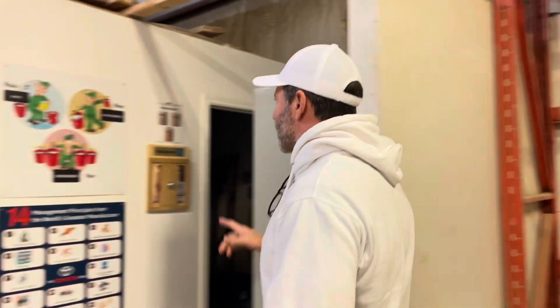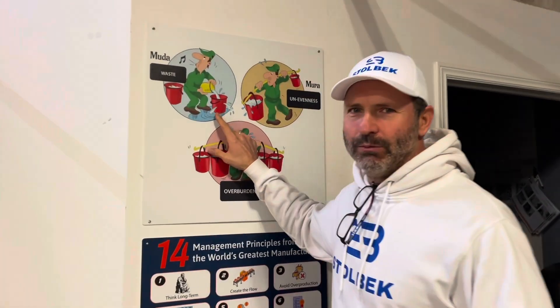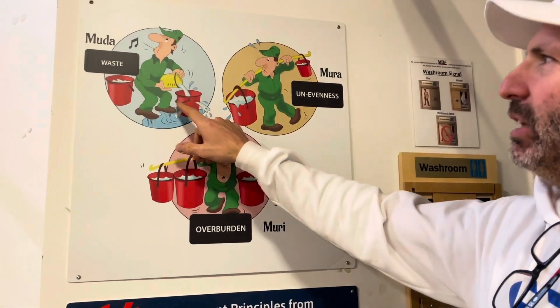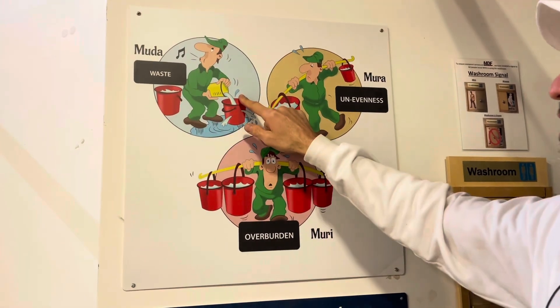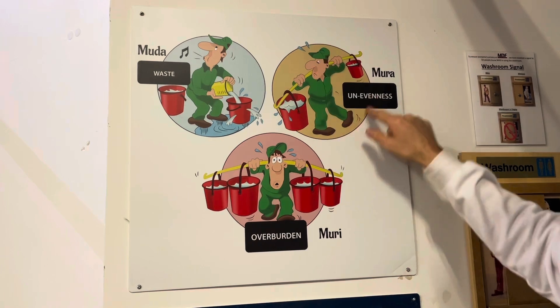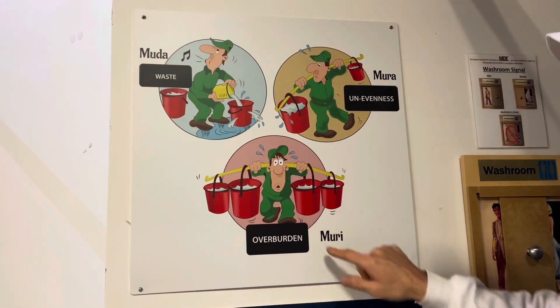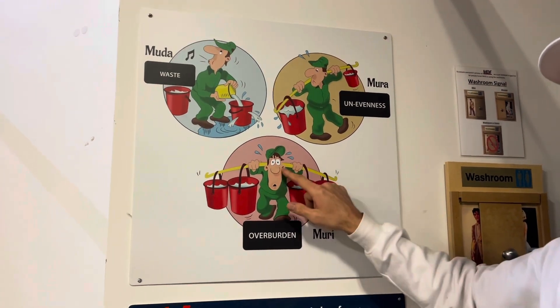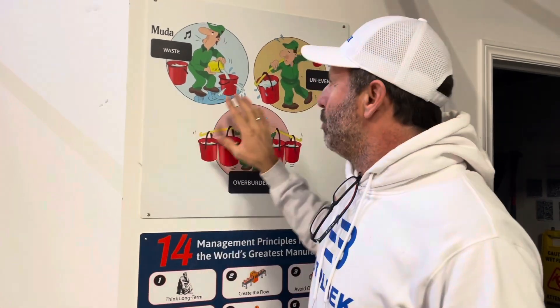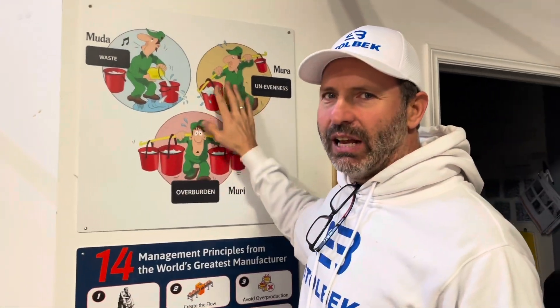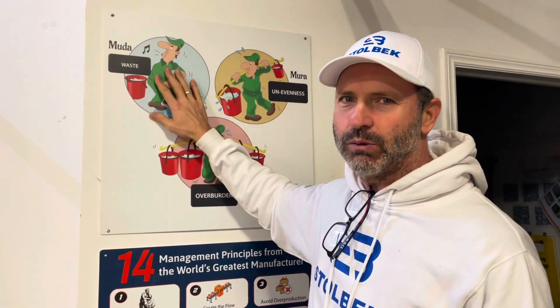Let me show you — these are the three M's of lean. Everybody knows about Muda, which is waste — we talk about the eight deadly wastes. But we have Mura, which is unevenness, and Muri, which is overburden. If you're not paying as close attention to the other two as you're paying to Muda, you're only getting 33% of the juice.